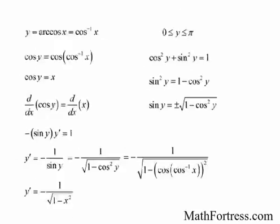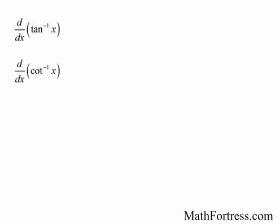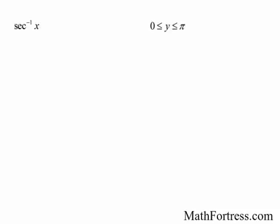The derivative of tangent inverse and cotangent inverse can be found using the same procedure and reasoning. The derivative of cosecant and secant inverse depend on the definitions used for these functions. Let's find the derivative of inverse secant. We define secant inverse, or arc secant, as a number between 0 and pi whose secant is x. We could differentiate arc secant of x using the same techniques used for arc sine and arc cosine, but there is a much easier way.